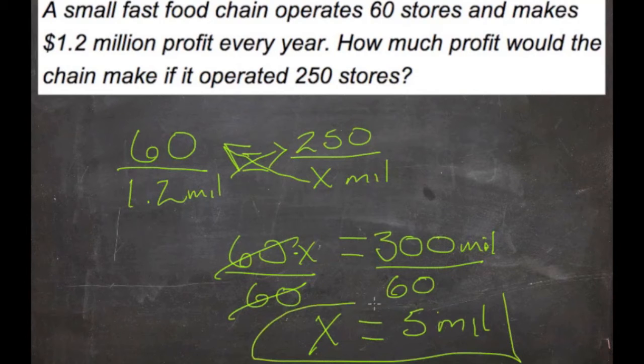Now we check real quick and make sure that's a reasonable answer. If we have 60, we have 1.2 million. 250 is about 4 times as big as 60. 5 is about 4 times as big as 1.2. So yeah, that's a reasonable answer. We'll take it.